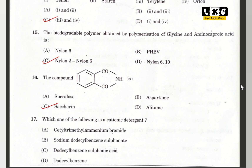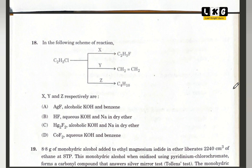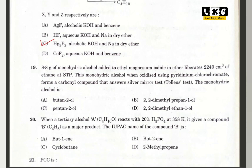Question number 17: which of the following is a cationic detergent? Option A is correct. Question number 18: in the following scheme of reactions, X, Y and Z respectively are option C. Question number 19: option B is correct — 2,2-dimethylpropan-1-ol. 2,2-dimethylpropanol is correct.